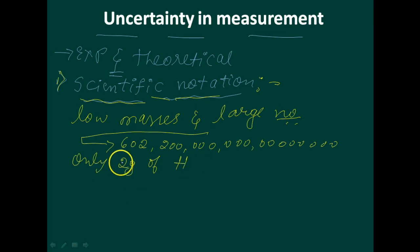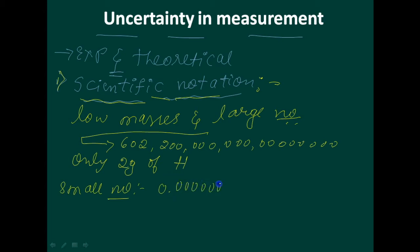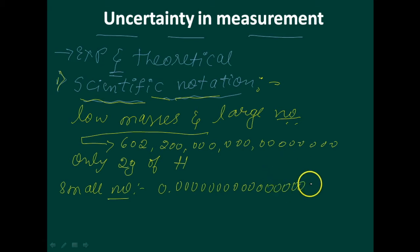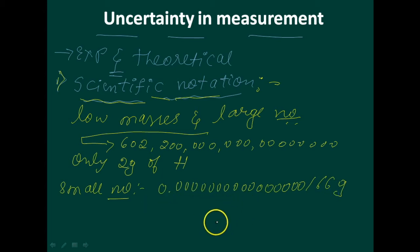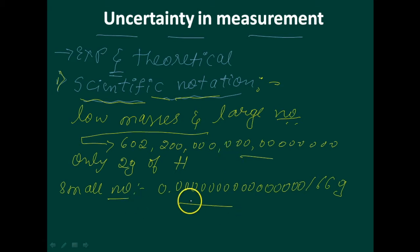Or as small a number as 0.000000166 grams, which is the mass of a hydrogen atom. So a chemist has to deal with both very large and very small numbers, and this is the problem we are facing.